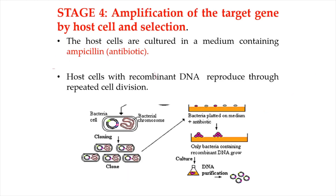The last stage of gene cloning is the amplification of the target gene by the host cell and selection. The host cells are cultured in a medium containing ampicillin, which is an antibiotic. The host cells that do not take up the plasmid will die, as the plasmid contains an ampicillin-resistant gene that would allow the host cell to survive in the ampicillin solution.